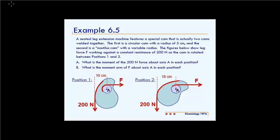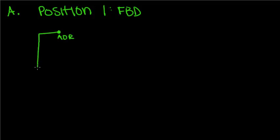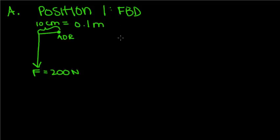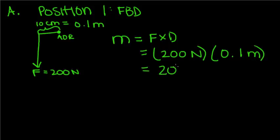For part A, we have two positions. We're going to draw a free body diagram for position 1 to start. We have an angle of rotation and a force of 200 newtons. We're given this distance, which is 10 centimeters, equal to 0.1 meters. The first position radius is 0.1 meters, so we use the equation M equals F times D. The force is 200 newtons and the distance is 0.1 meters, giving us 20 newton meters as the moment about axis A.